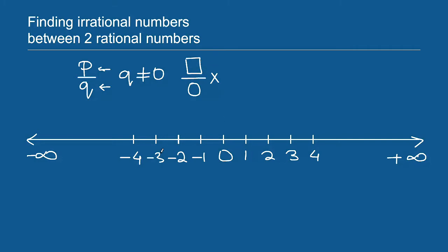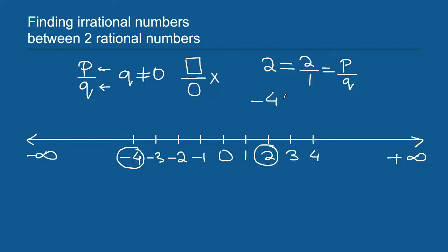All integers are rational numbers. For example, the integer 2 can be written as 2 divided by 1, which matches the definition of a rational number because both 2 and 1 are integers. Similarly, the negative integer minus 4 can be written as minus 4 by 1, where again both minus 4 and 1 are integers. So all integers are rational numbers, and fractions like 2 by 3 and 5 by 8 are also rational numbers.